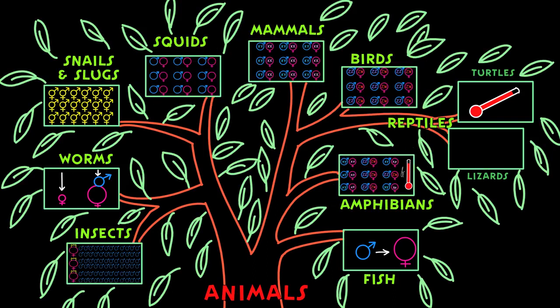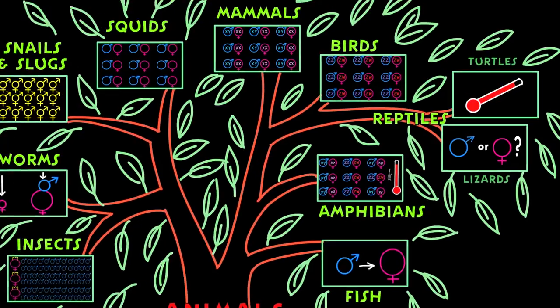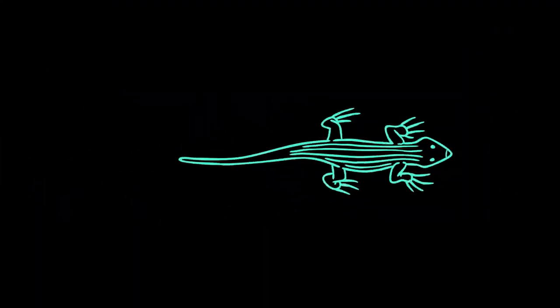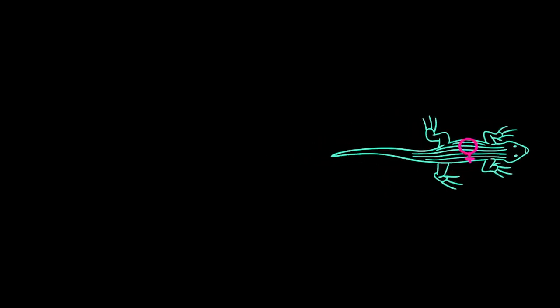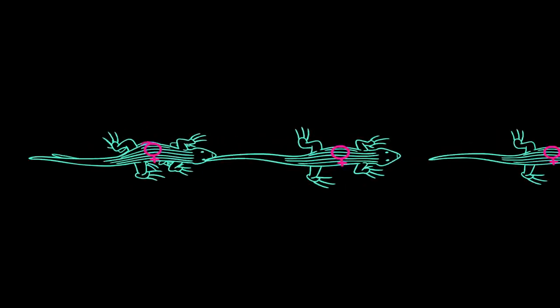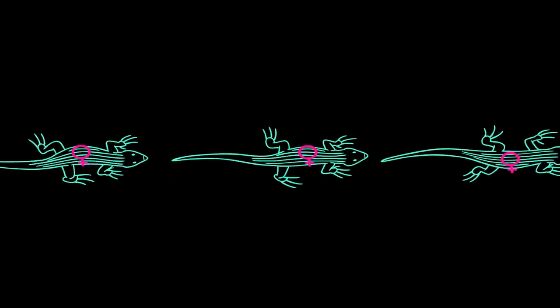So for some species, the question of boy or girl is answered by genetics, for others it's answered by the environment, and for others still, they don't even bother with the question at all. Take whiptail lizards, for example. For those desert lizards, the answer is easy: it's a girl, it's always a girl. They are nearly all-female species, and although they still lay eggs, these eggs hatch out female clones of themselves.